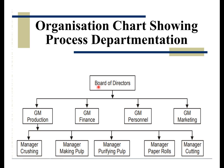The organization chart for process departmentation includes a board of directors, GM production, GM finance, GM personnel, and GM marketing. Below these are managers for each process stage: manager crushing, manager making pulp, manager purifying pulp, manager paper rules, and manager cutting — representing the process a product follows to reach its final form. This is an organization chart based on process departmentation, which is part of divisional departmentalization.